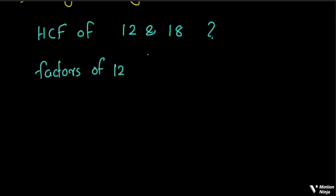If I have the factors of 12: 1 × 12, then 2 × 6, 2 × 12, then 3 × 4 = 12. So 3 × 4. I will list the factors of these numbers.